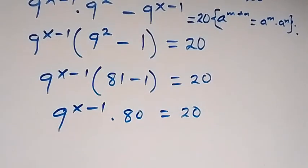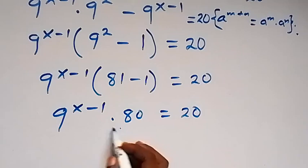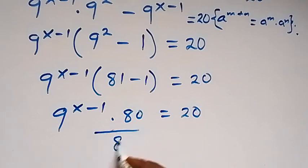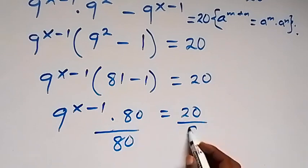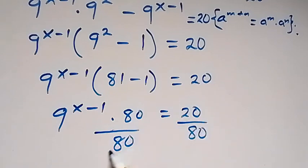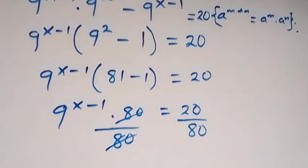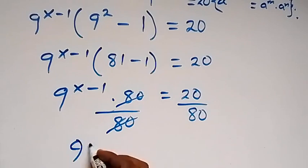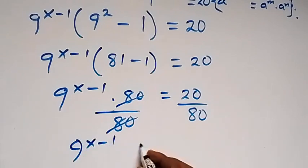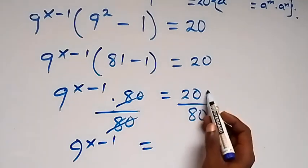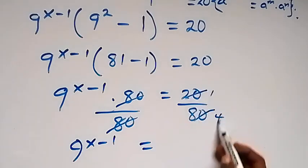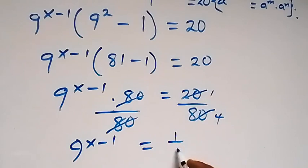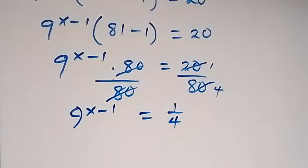Now we can divide both sides by 80 to remove this 80. Divide both sides by 80, so that 80 will cancel out. Then we have 9 raised to the power x minus 1, now equals 20 over 80, which is 1 over 4.